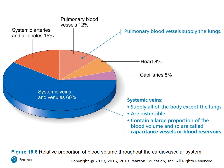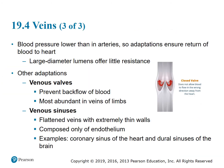Systemic arteries and arterioles contain about 15% of blood volume. Pulmonary blood vessels contain 12%. The heart itself has about 8%, and capillaries 5%. Blood pressure is lower in the veins than in the arteries, so adaptations ensure the return of blood to the heart.